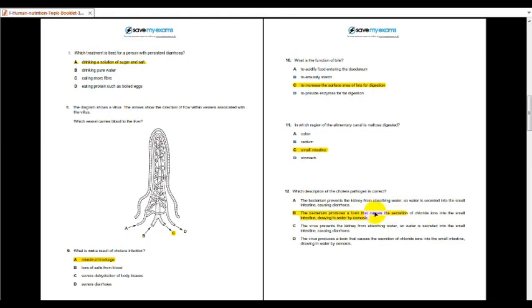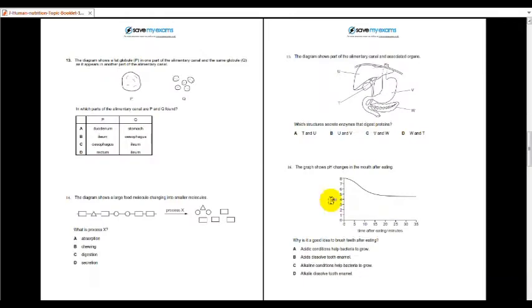So that's how you look for the answers for paper 2. Moving on. Number 13, which parts of the elementary canal are P and Q found? P is fat globule, the bigger one, and Q is the same one but after being broken down into smaller pieces. So P must be before it reach the ileum. Before it reach the ileum. So it must be C. Esophagus and ileum rectum, not possible. Duodenum Q, stomach? No. Because fat digestion doesn't happen in the stomach. So you also know. Number 14, what is the process of X? It is the digestion. Why? Because it breaks down the bond between the molecules.